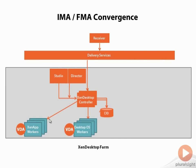Now the controller software is different from the software you install on the actual servers. The software you install on the servers is a little different from what you install on the desktops, but it's the same concept, and they're all managed by two consoles. That's the beauty of it — it still works the same way through Receiver and through the delivery services. This infrastructure assumes you want to use Machine Creation Services. For those who still like Provisioning Services, it can still be deployed for ZenApp and ZenDesktop. There is some more work to be done to make Provisioning Services more integrated with ZenDesktop 7, but it's still available for those who see performance or scalability benefits from it.